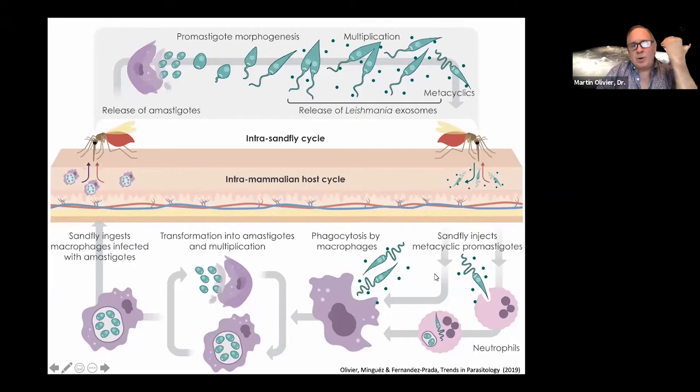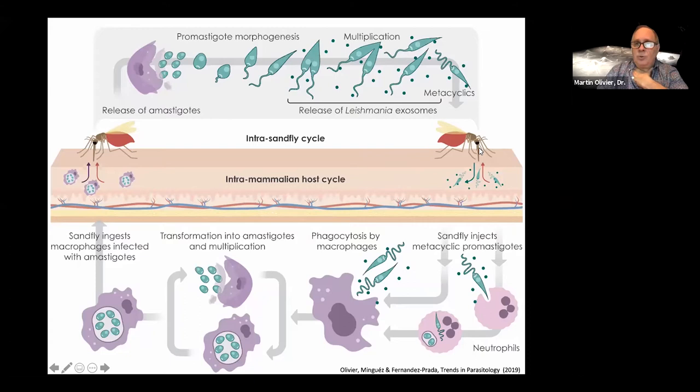What is Leishmania? It's a parasite I have worked on since 1984 — I did my PhD on Leishmania, so it's more than 30 years ago. This parasite is transmitted by the bite of a sand fly. During the blood meal, the promastigote parasite will enter the cells.